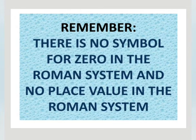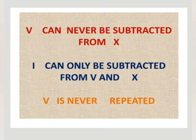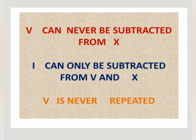That's why 4, we are writing IV. Correct? Yes. And V can never be subtracted from X. V, we cannot subtract from X. That is another rule. And next one,